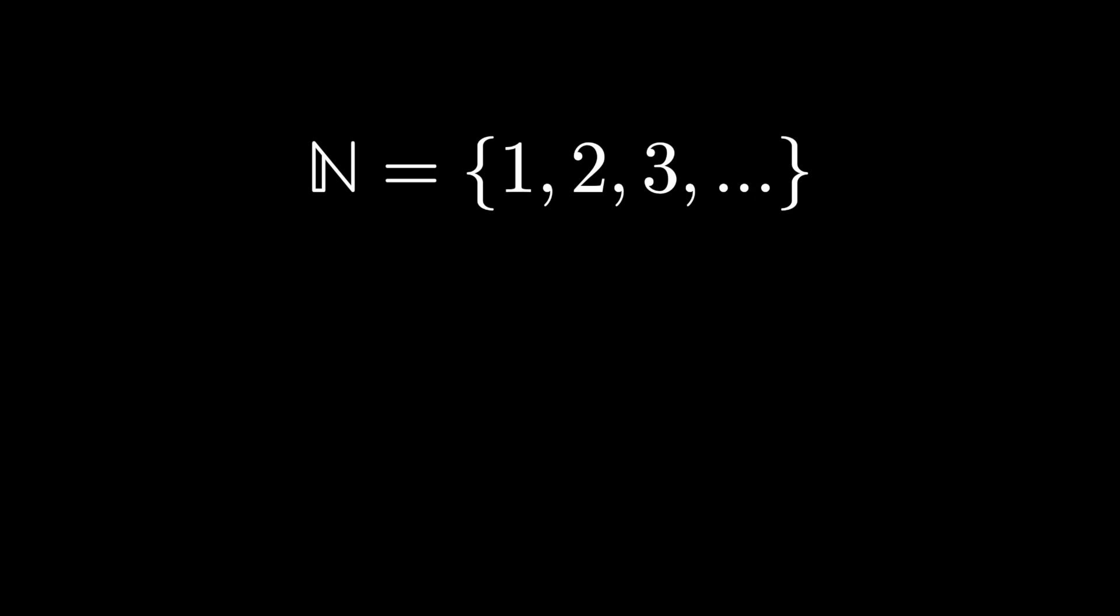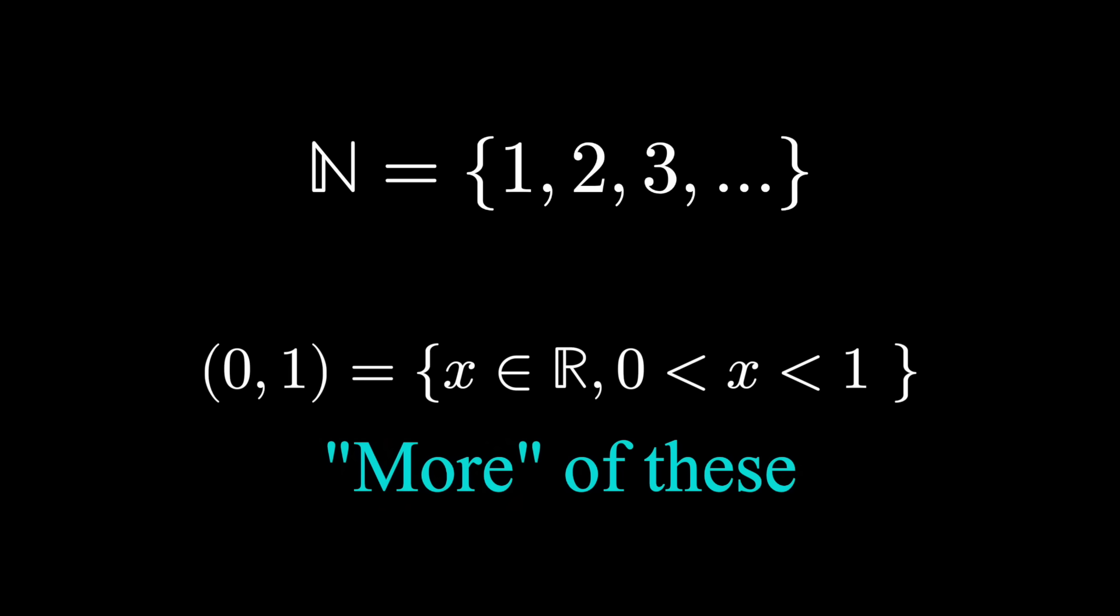Did you know some infinities are bigger than others? Certainly there are an infinite number of natural numbers, but there are also infinite numbers between 0 and 1. And I say that there are more numbers between 0 and 1 than there are natural numbers. Let me show you what I mean.